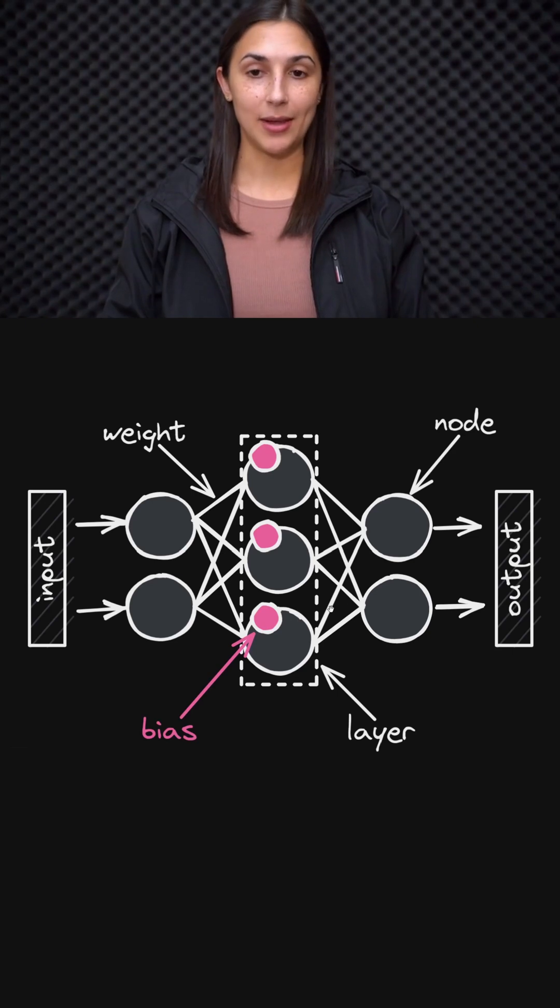Now, what's new in this diagram is what is in pink here, which are the bias nodes that correspond to each one of our output nodes in this hidden layer here.